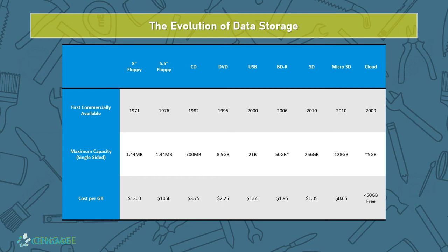The evolution of data storage is something we're all familiar with. Looking back at the old 8-inch floppies released in 1971, buying a gigabyte of storage would have cost about $1,300. Moving forward 10 years, CDs brought that down to about $375 per gigabyte. Twenty years further with USB, it was cut to about $1.65. By 2010, another dollar down to about $0.65 a gig. Now with cloud storage, if you have less than 50 gigs, you probably have it for free through OneDrive, Dropbox, iCloud, or similar services.